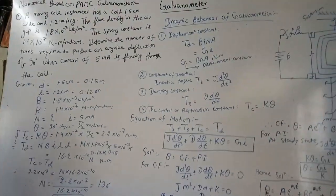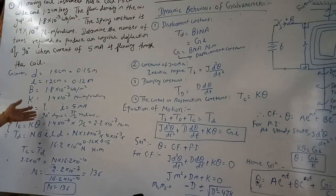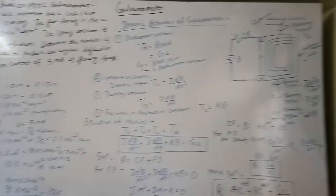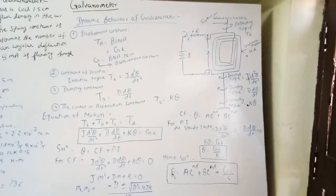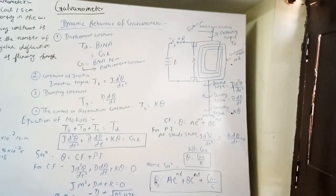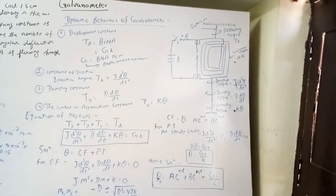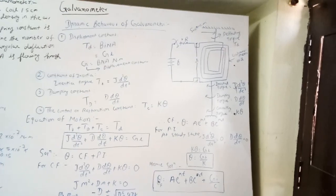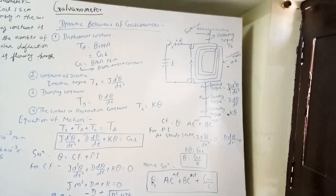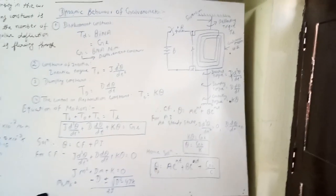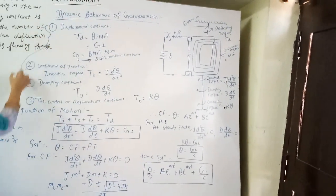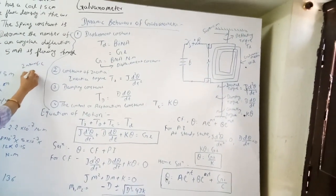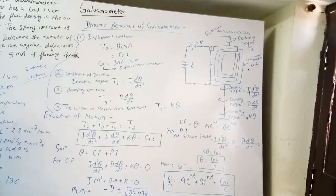We can see that this type of numerical is very simple — it is formula based. Now here we are discussing the next topic, that is the dynamic behavior of galvanometer, or we can say the theory of galvanometer. There are four types of constants in a galvanometer, all known as intrinsic constants.